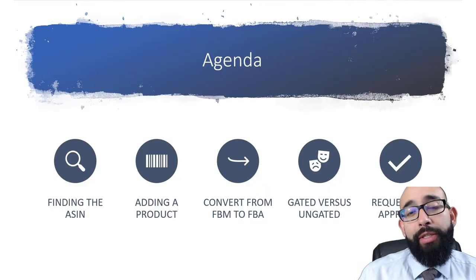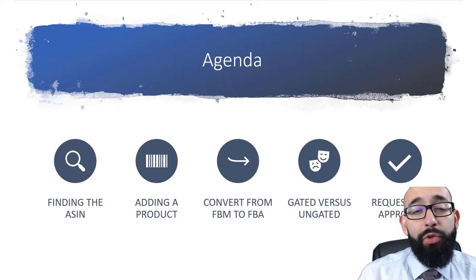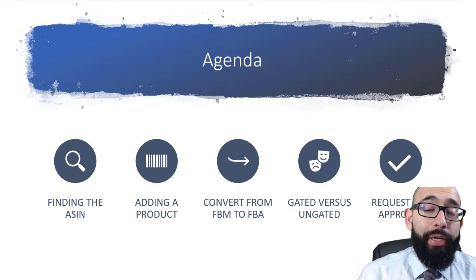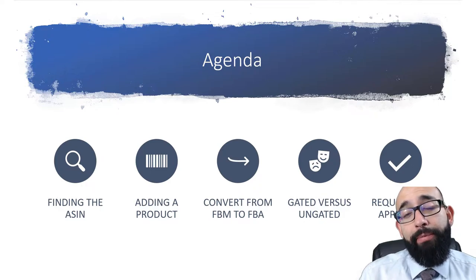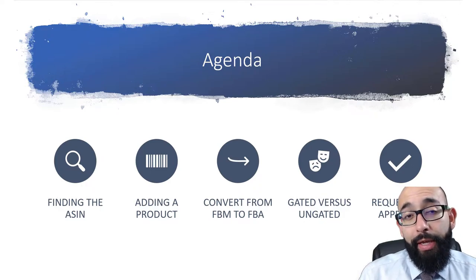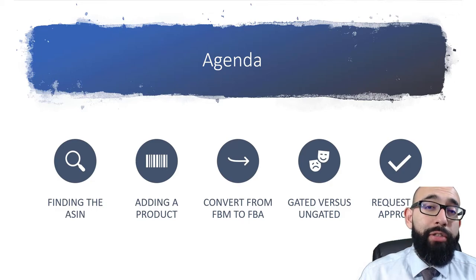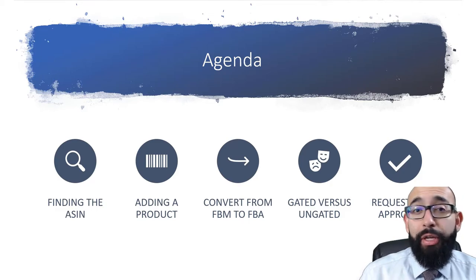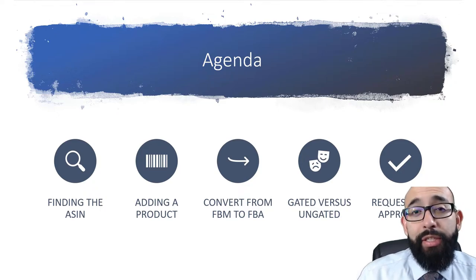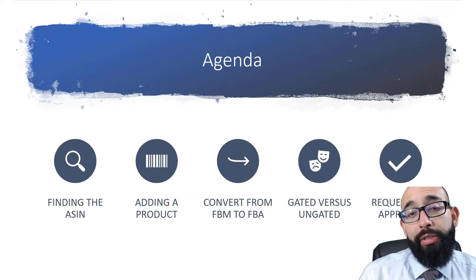On today's agenda, I'm going to discuss how to find the ASIN number of the product you want to sell, how to add that product to your inventory, then convert it from FBM — fulfillment by merchant — to fulfillment by Amazon FBA, gated versus ungated, and how to request approval if you are gated on a product, subcategory, or category. I'll also discuss how I got auto-ungated for some products and categories.